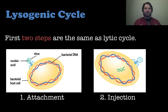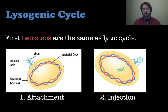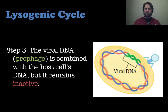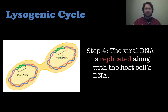This is very different from the lysogenic cycle. The first two steps are the same as the lytic cycle: the virus attaches and the virus injects its genetic material. But here's where the difference comes in at step three. That viral DNA — actually called the prophage — combines with the host cell's DNA. It becomes part of that DNA, and as the cell replicates itself, it keeps copying that viral DNA. But that viral DNA just stays inactive.